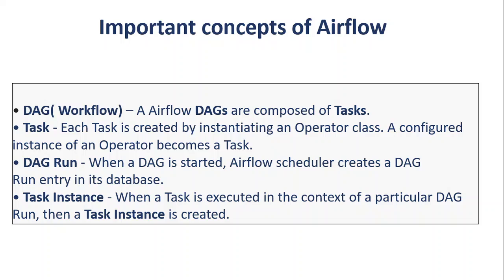A task is a unit of work in a DAG, created by initiating an operator. For now, think of a DAG as your Python script where you define tasks, and a task is one unit within that DAG. A DAG run refers to how many times you run a DAG — every time you run a DAG, the Airflow scheduler creates an entry in its database. A DAG can have multiple DAG runs; if you run it five times a day, there will be five DAG runs with different execution times. A task instance is created when a task is executing from a particular DAG run — much like an instance of a class in OOP.